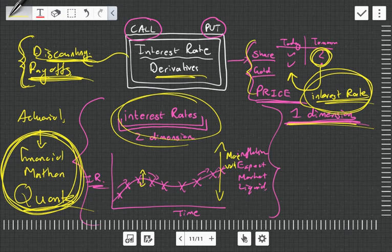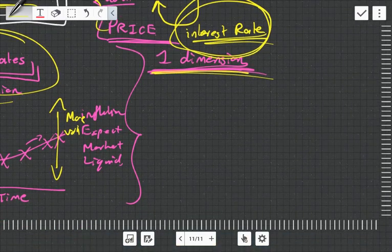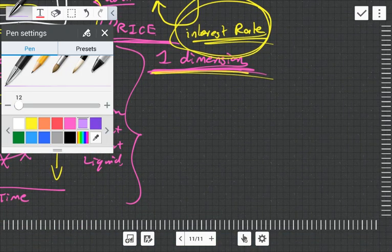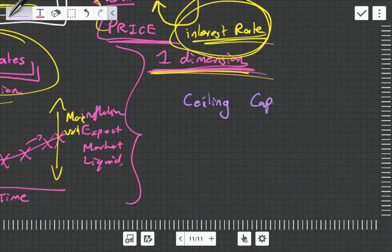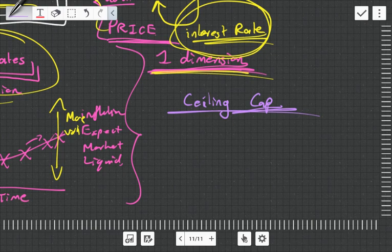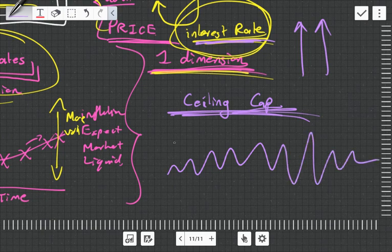Let's talk about floors, ceilings, and collars. You can get a ceiling or a cap. Say you're buying a house and your payments depend on the interest rate. If interest rates go up too much, your house repayments become quite high and you could get bankrupt. So you could purchase a ceiling, which means if interest rates go above a determined ceiling, it makes a payout to you.